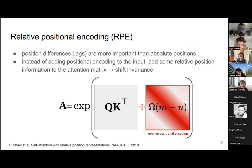A technique to alleviate this is relative positional encoding: instead of caring about absolute positions, we care about position differences or lags. Instead of adding absolute position information to the network input, we add relative positional information to the attention matrix in a shift-invariant way. We have the dot product matrix and add to it another matrix that depends on the differences between indices, not on the absolute indices.